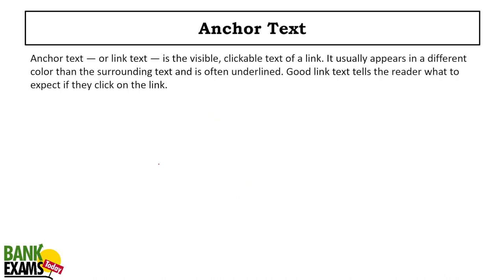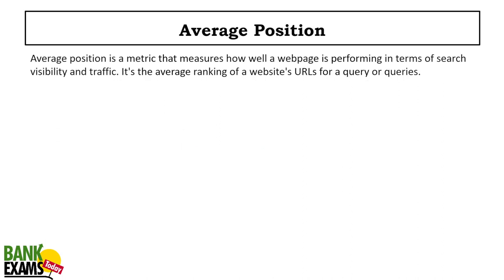Anchor text: when you go to a website and you see a clickable link — for example, 'click here' in blue color with an underline — that clickable text is known as the anchor text.